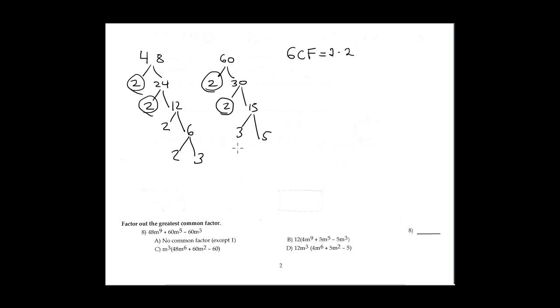So we have 2 times 2, and also we have one 3 in common. 2 times 2 is 4, times 3 is 12. This is the GCF.